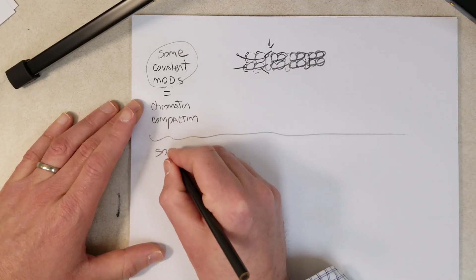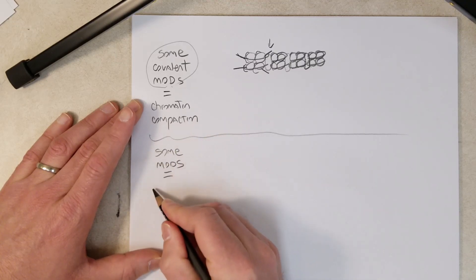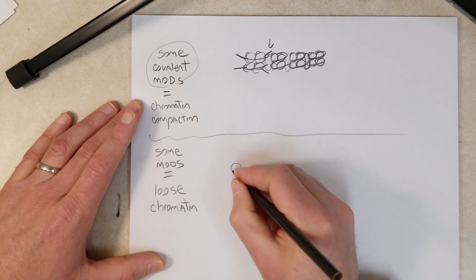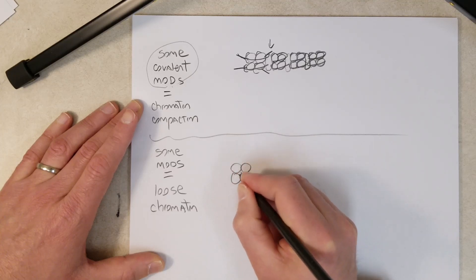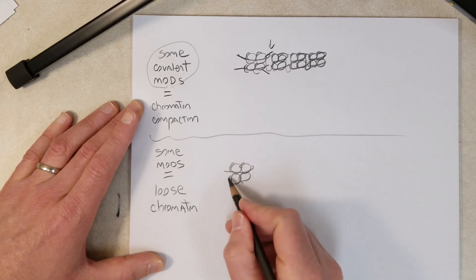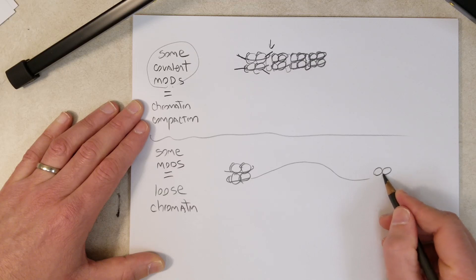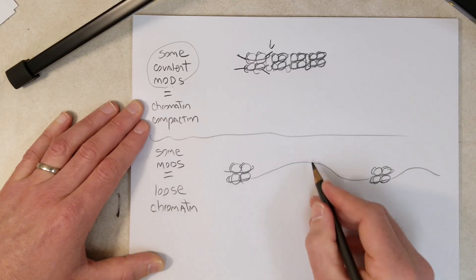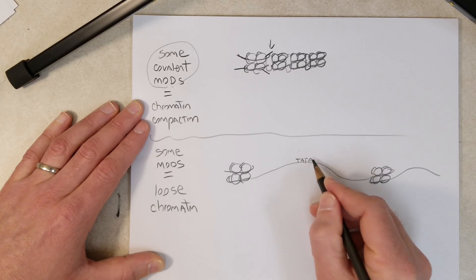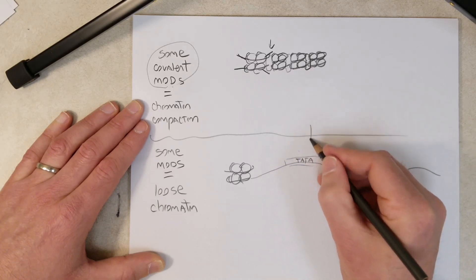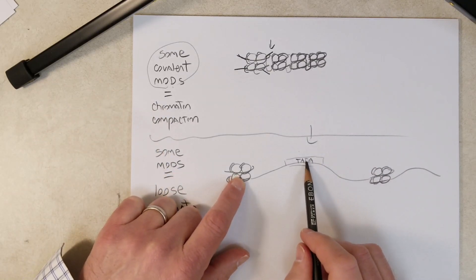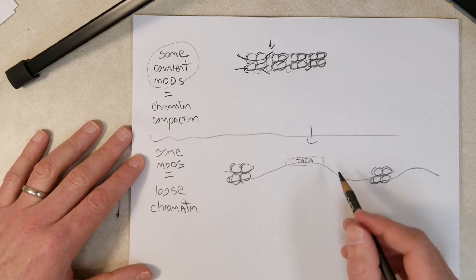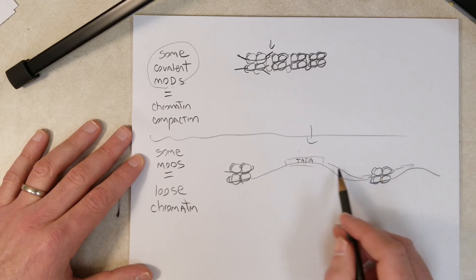Conversely, some modifications of the histone tails encourage a loosening of the chromatin — loose chromatin. I can quickly diagram that: an octamer of histones with DNA wrapped around, then another octamer of histones with DNA wrapped around, spaced apart. If the TATA box of a promoter is in this region, it's no longer in a compact chromatin arrangement, so the general transcription factors can find it and bind it, and the coding region — the gene — can be transcribed.